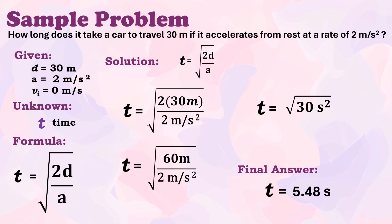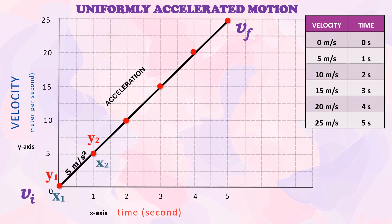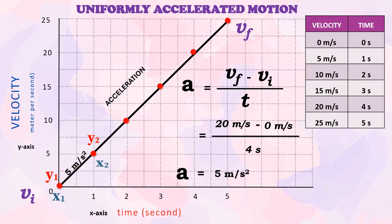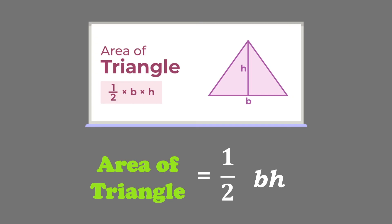Suppose we plot the velocity versus time graph of an object undergoing uniformly accelerated motion. If the object has a uniform acceleration of 5 m/s² and started from rest, then each succeeding second the velocity will increase by 5 m/s. The slope of the line is the acceleration. The area under the curve is the area of the triangle.